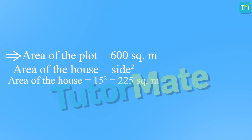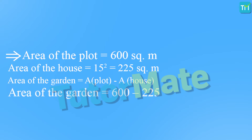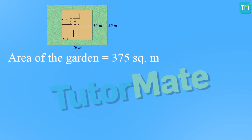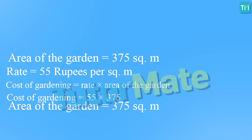First, we find the area of the rectangular plot: length times breadth equals 30 times 20, which is 600 square meters. Next, Amit builds a square house of side 15 meters, so the area of the house is side squared equals 225 square meters. The garden occupies the remaining plot, so we subtract: area of garden equals area of plot minus area of house, giving us 600 minus 225, which is 375 square meters.